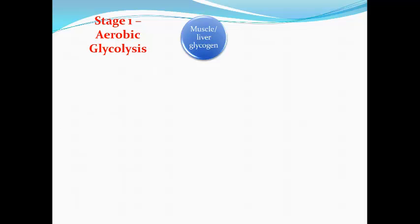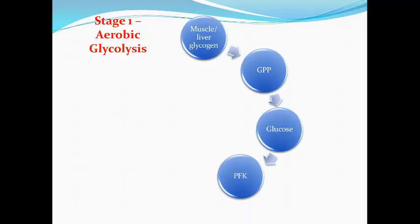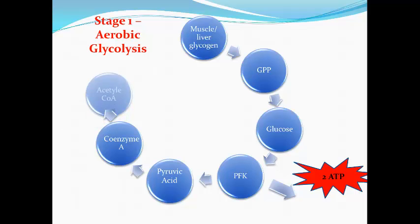But there is one major difference. As before, we use our stores of muscle and liver glycogen, and this is broken down by an enzyme called GPP into glucose. This glucose is further broken down by an enzyme called PFK, and it's this breakdown of glucose which gives us the energy for 2ATP. However, in the presence of oxygen, the pyruvic acid we get from this system is converted and combines with something called coenzyme A, forming a compound called acetyl coenzyme A, or acetyl CoA.